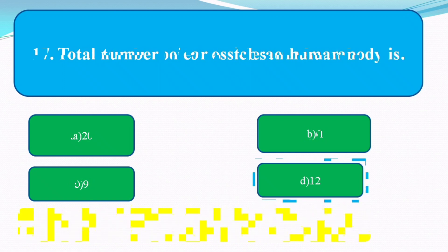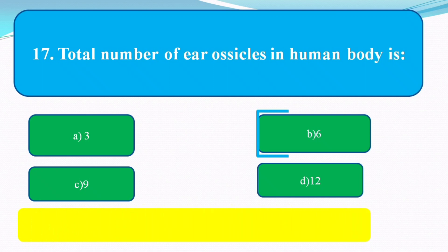The total number of tarsal bones in the human body is? The options are 3, 6, 9, 12. The answer is 6.